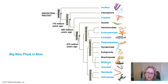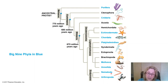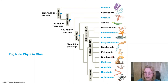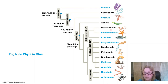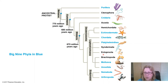Mollusca includes everything that secretes a shell, as well as octopus and squid. Annelida are the segmented worms. Nematoda are the non-segmented worms. Arthropoda includes everything with a hard chitin exoskeleton and jointed legs. We'll also discuss a few others important from an evolutionary perspective that aren't in the Big Nine. We'll start with invertebrates — everything except chordates — then cover chordates in the next chapter.